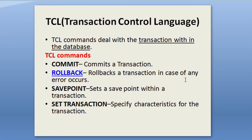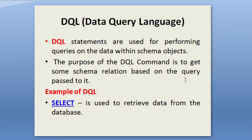DQL stands for Data Query Language. DQL statements are used for performing queries on the data within schema objects. The purpose of DQL commands is to get schema relations based on the query passed to it — for example, you use SELECT to retrieve and query data from the database.